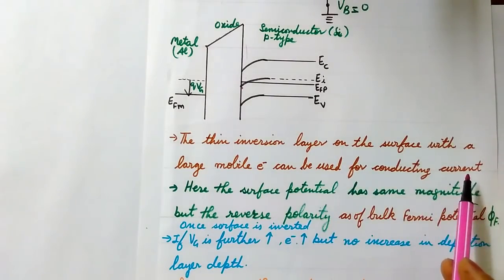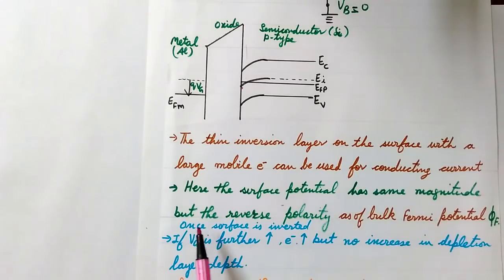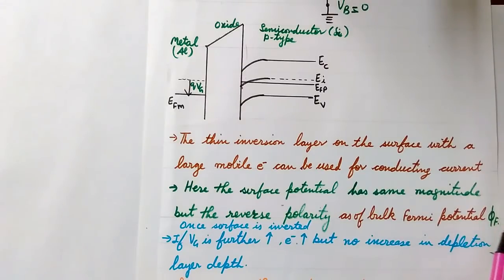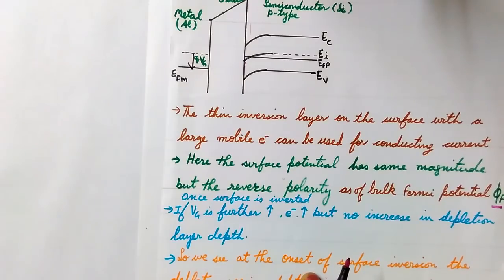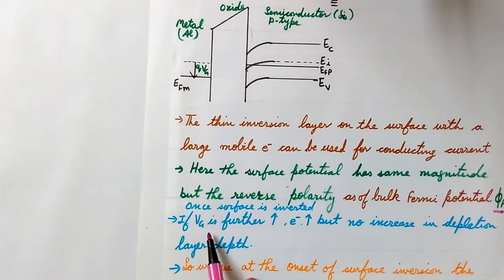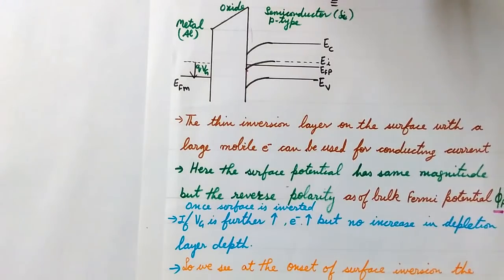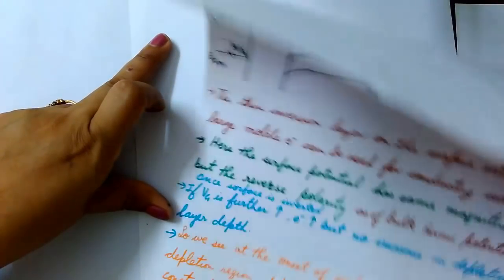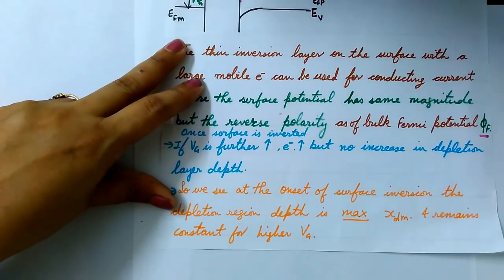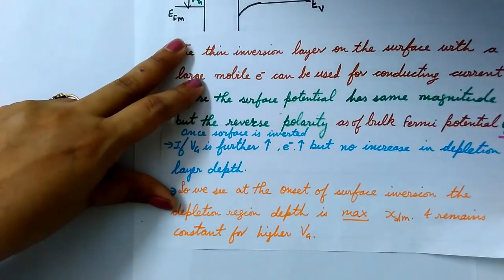This thin inversion layer — the collection of electrons at the surface — can be used for conducting current. The surface potential at the interface has the same magnitude but reverse polarity compared to the bulk Fermi potential φF. At the onset of surface inversion, the depletion layer depth is at its maximum value, XDmax, and it remains constant for higher VG — the depletion depth saturates.